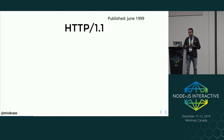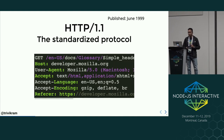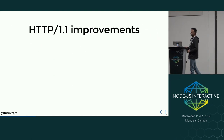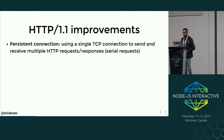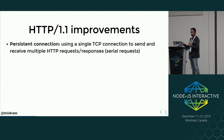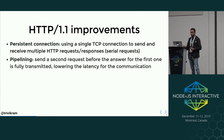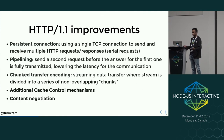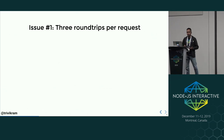HTTP/1.1, the standardized protocol, came in June 1999. We'll just see what the improvements were. The first improvement was persistent connections, where you can use a single TCP connection to send and receive multiple requests and responses serially. Then there was pipelining, where the second request can be sent before the first one is fully transmitted. There was also chunked transfer encoding, additional cache control mechanisms, and content negotiation.